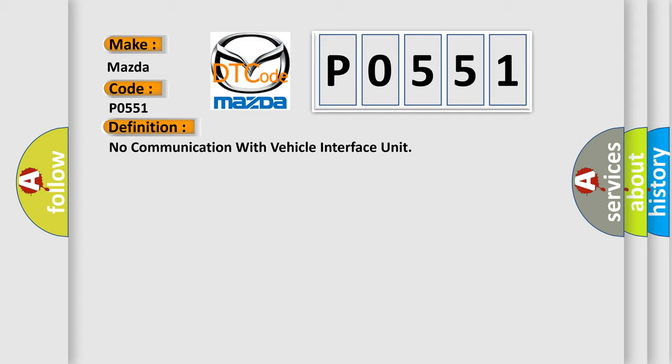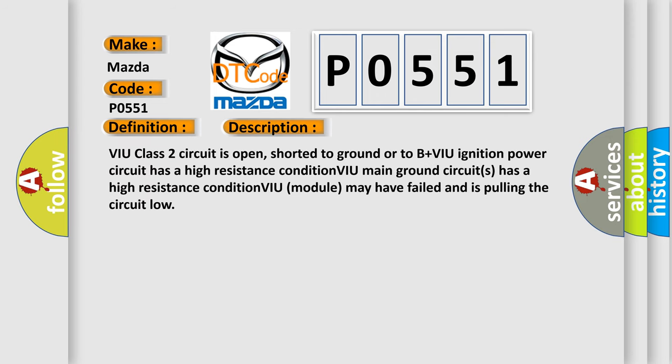And now this is a short description of this DTC code. VIU class 2 circuit is open, shorted to ground or to B plus VIU ignition power circuit has a high resistance condition. VIU main ground circuits has a high resistance condition. VIU module may have failed and is pulling the circuit low.